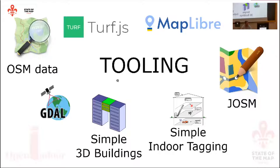Of course OSM data are the input. Turf.js is a JavaScript library for simple geometric transformations, very useful to use at runtime dynamically. Our map engine is MapLibre — without MapLibre we would honestly not have been able to accomplish what we did. We also use JOSM. We don't use QGIS because we were not proficient enough with it, and we were able to do what we wanted with simpler tools.